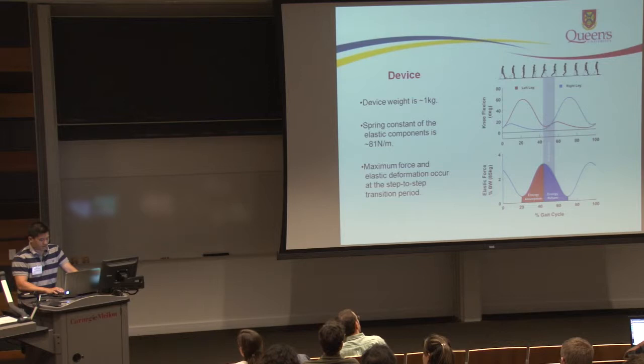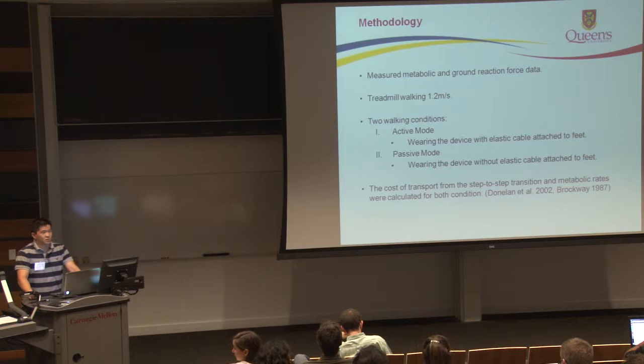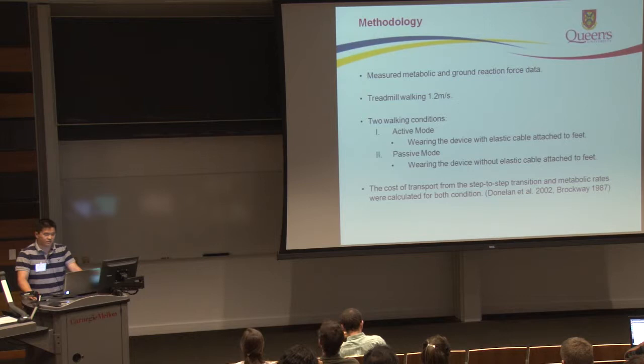For our methodology, we measured the subject's metabolic and ground reaction force data while walking on a treadmill at 1.2 meters per second under two walking conditions: first, walking with the device in active mode, and second, walking with the device in passive mode. In both conditions, they wore the backpack; in active mode, the elastics are attached to the subject's feet, while in passive mode they're just walking normally with the device and the additional weight of the backpack.